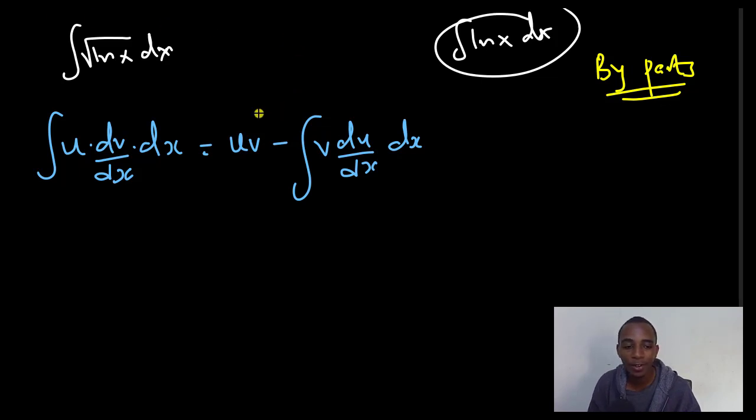Now, there is a catch here. You have to choose wisely which function to use as u, and which function to use as dv dx. You choose something that is easier to differentiate, and that's your u. And something that is easier to integrate is your dv dx. For this, I will let u be the square root of ln x, because if I let dv dx be ln x, that would be just bringing up the same problem.